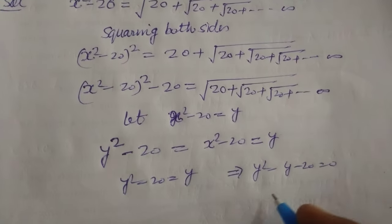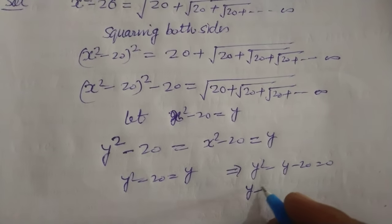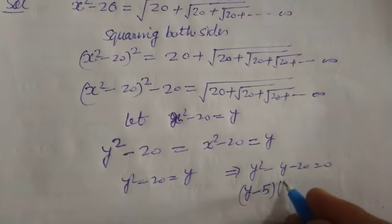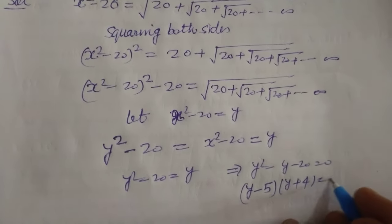Now, factorize it. This is a quadratic equation. So, this becomes Y minus 5 into Y plus 4 equal to 0.